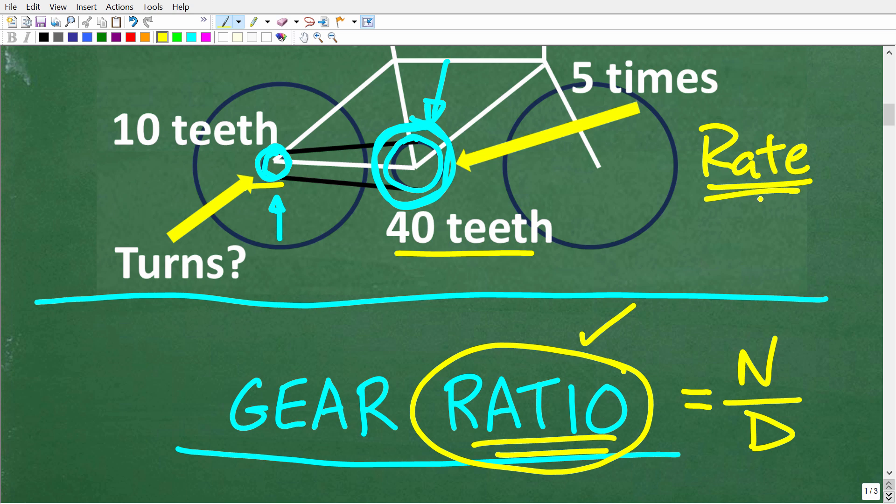In a rate, the deal here is that the units of measure in the numerator and the denominator are different. So, this would be something like 60 miles per one hour. So, here, we're comparing distance to time. A ratio, again, is where units of measure are the same. So, we're talking about teeth and teeth.